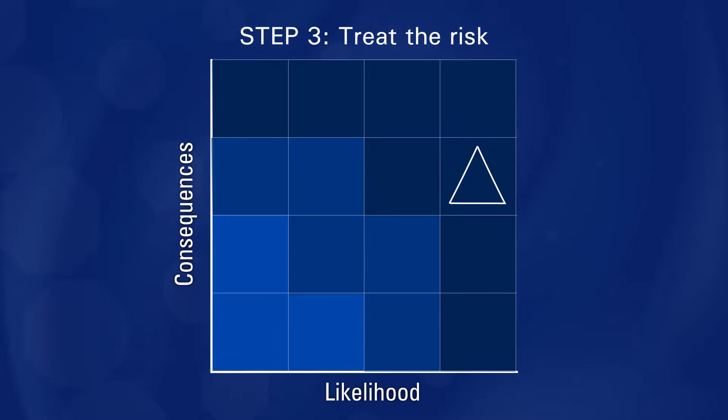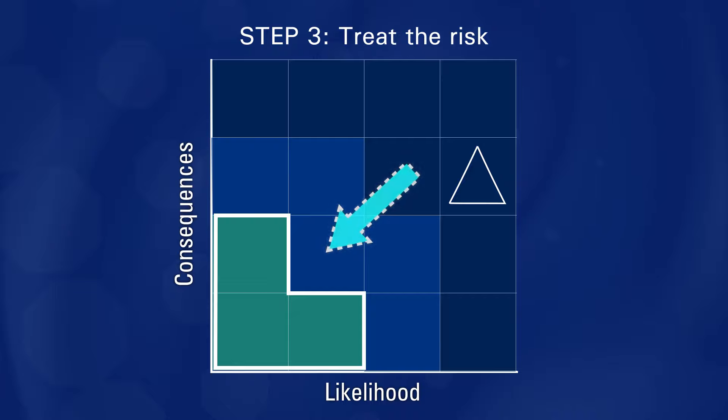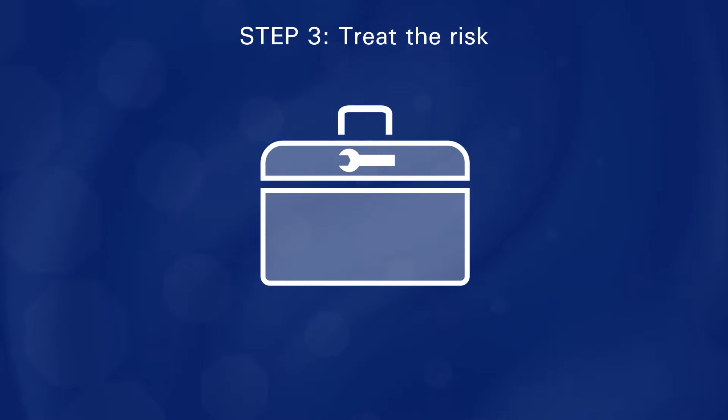In the third and final step, you must outline measures that could help reduce the risk to an acceptable level. The measures or controls can be organizational, such as new policies or procedures, or they might be technical, such as a patch or virus scan.